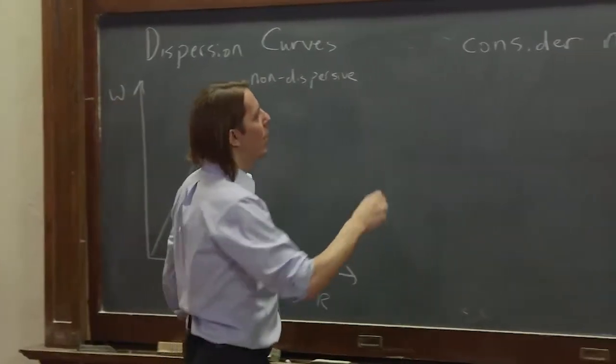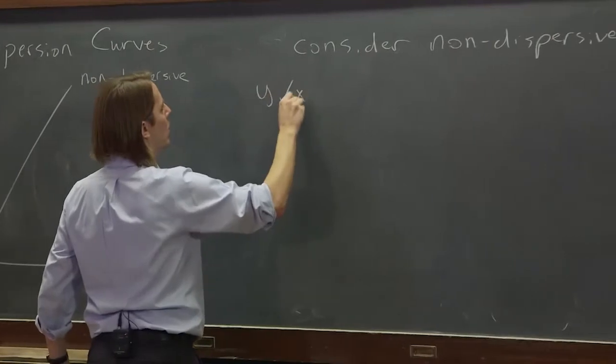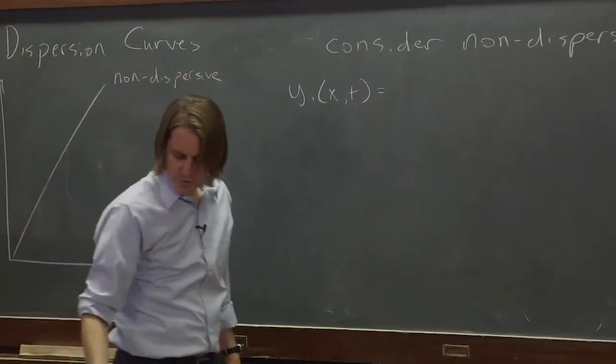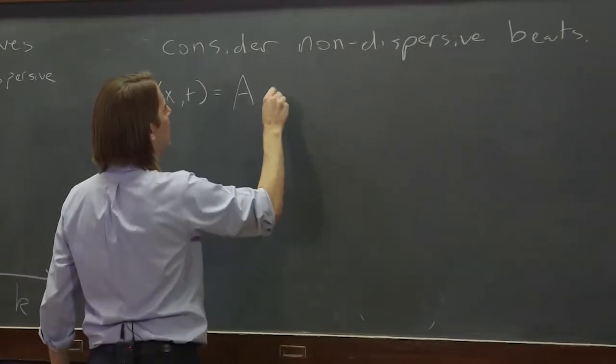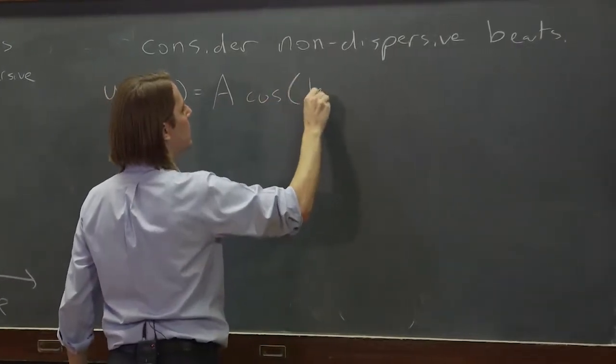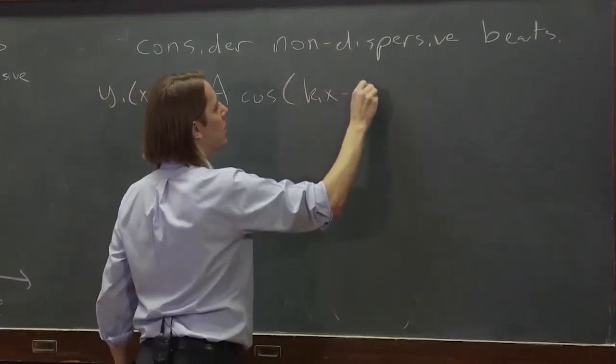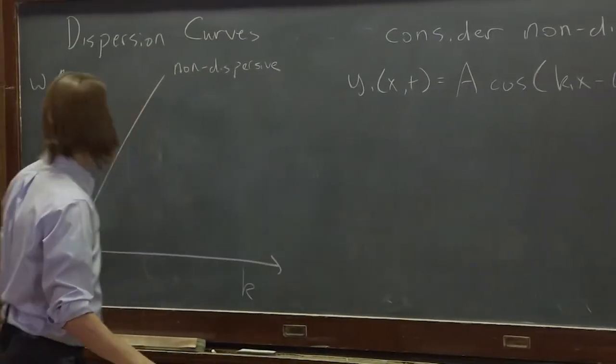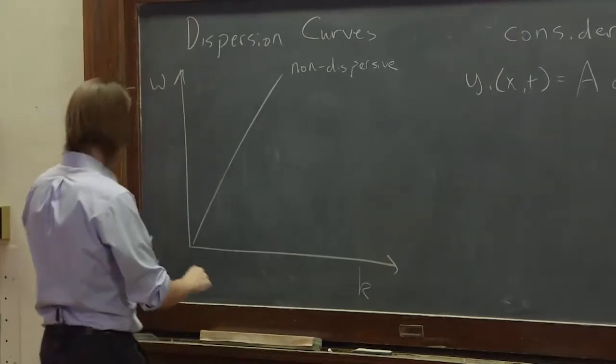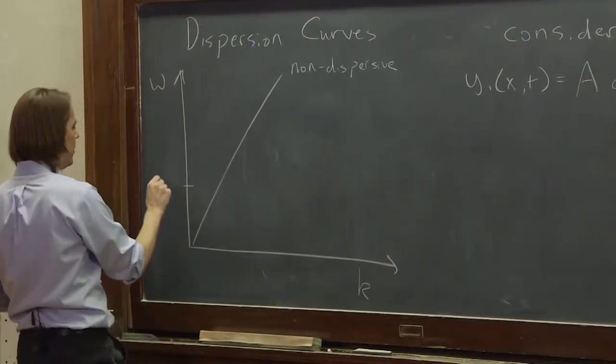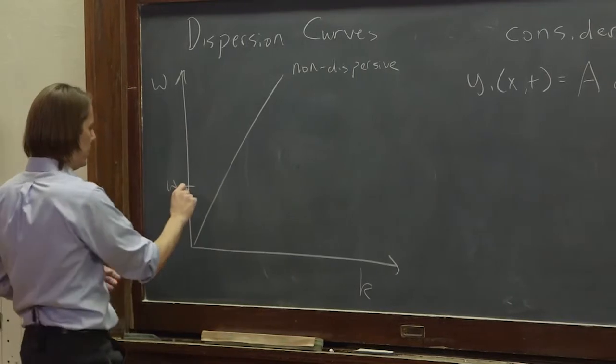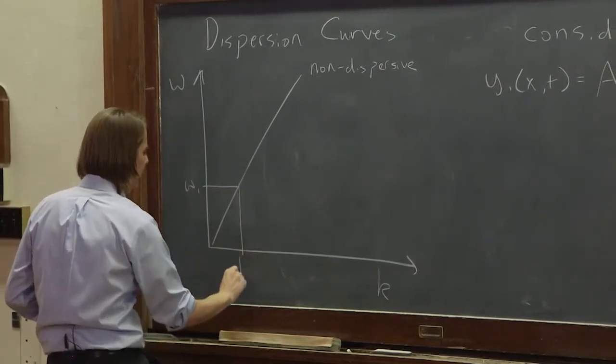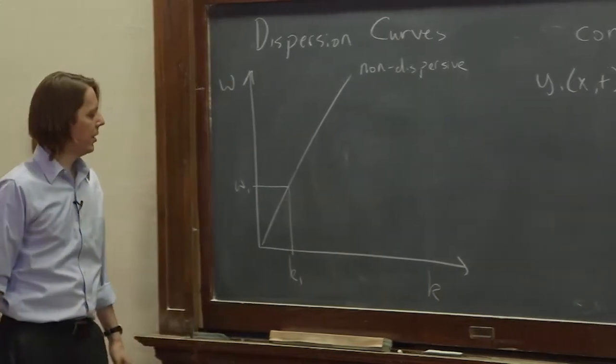So let's do that. Let's have y₁(x,t), give them the same amplitude, is A cosine(k₁x - ω₁t). So that's one. And now let's look over here and define where k₁ and ω₁ are. So the first one's going here at ω₁. And we can draw a line over and a line down and say, therefore, it's there at k₁.